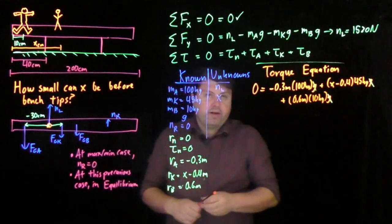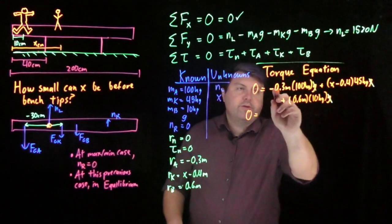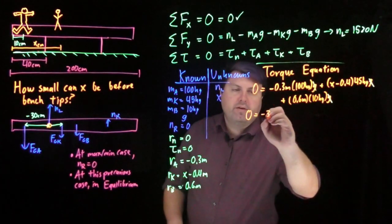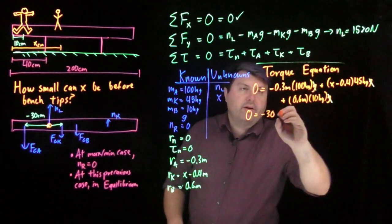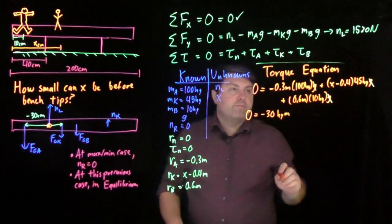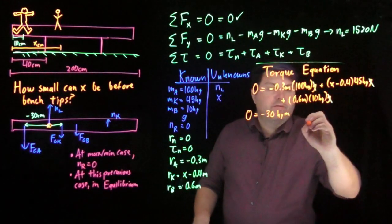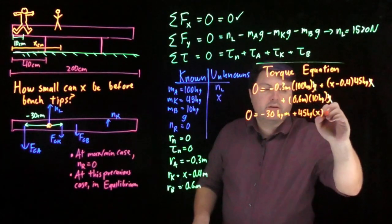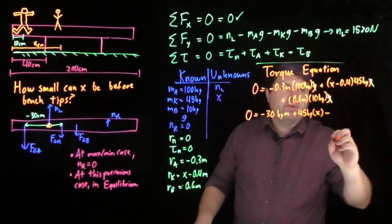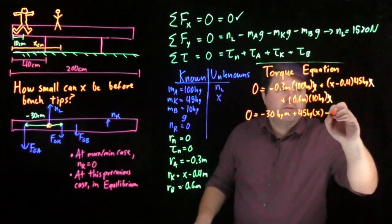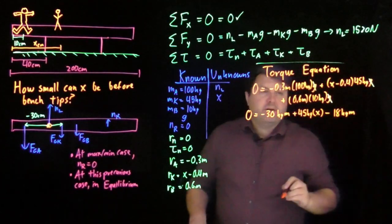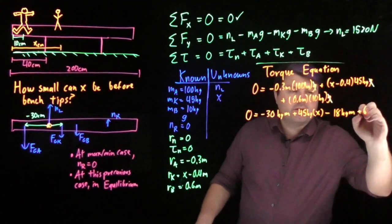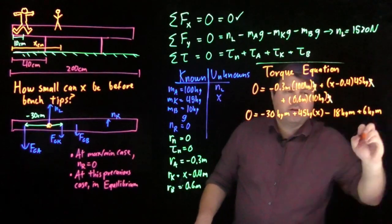And so then we get 0 equals 0.3 times 100 is 30. So we get negative 30 kilogram meters plus 45 kilograms times x. Minus 0.4 times 45 is 18. So we get minus 18 kilogram meters. And then 0.6 times 10 is 6. So we get plus 6 kilogram meters.